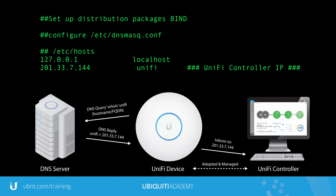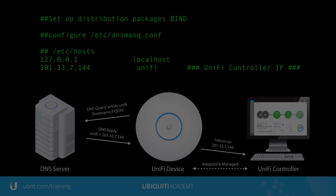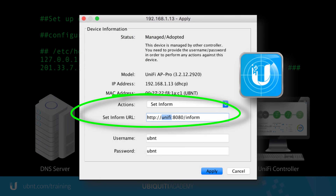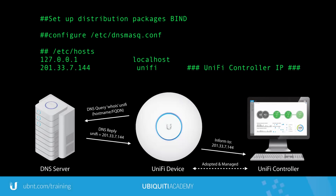Finally, because the default Inform URL includes the hostname "Unify", the network DNS server can also be configured to resolve hostname Unify to the Layer 3 IP of the Unify controller.